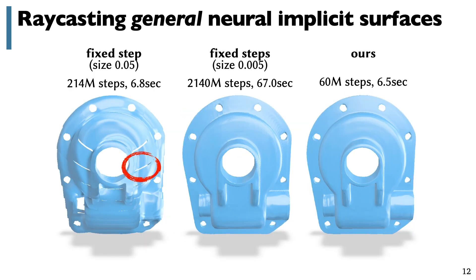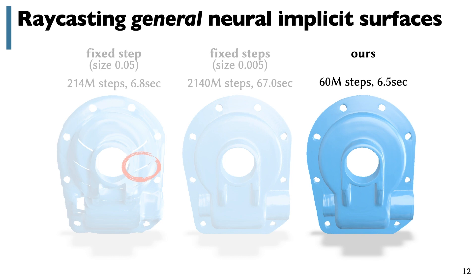Now remember, here we're working with implicit functions which do not necessarily have any special structure. Without our method, the only recourse would be to cast rays using small fixed-sized steps. But taking large steps leads to errors, like you see on the left, whereas taking very small steps would be prohibitively expensive. And our approach is better than either.